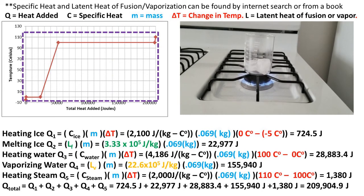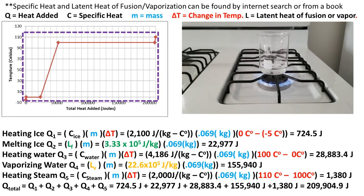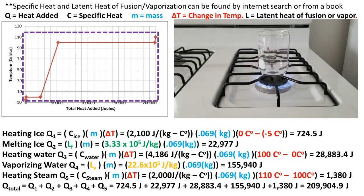To finish off this video, let's find the total joules of heat needed to get water from ice to steam. We can add up all of the joules of heat needed for the various temperature changes and phase changes. So after adding up Q1 through Q5, we get an answer of 209,904.9 joules of heat energy to make 0.069 kilograms of ice at negative 5 degrees Celsius into steam at 110 degrees Celsius.